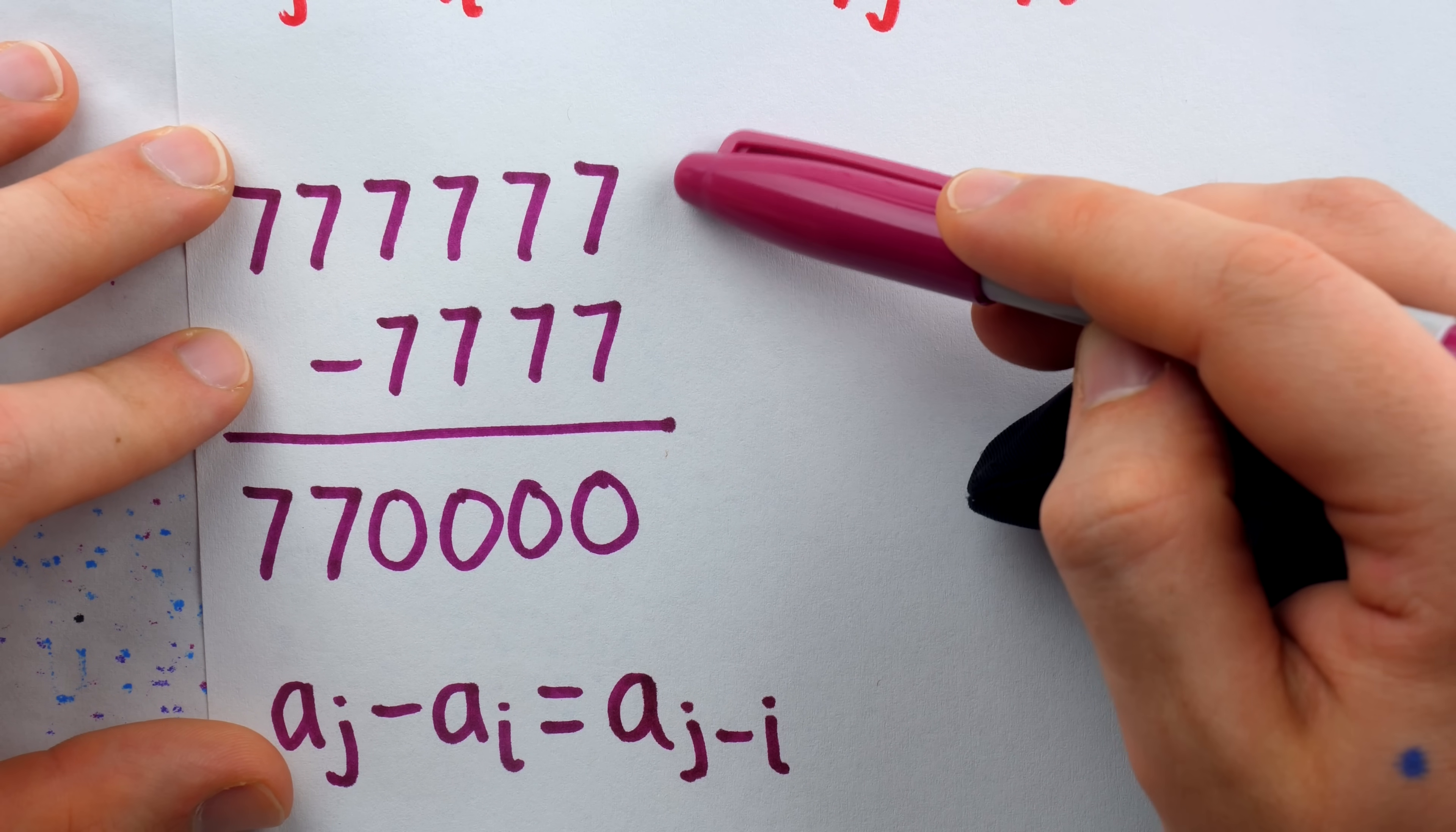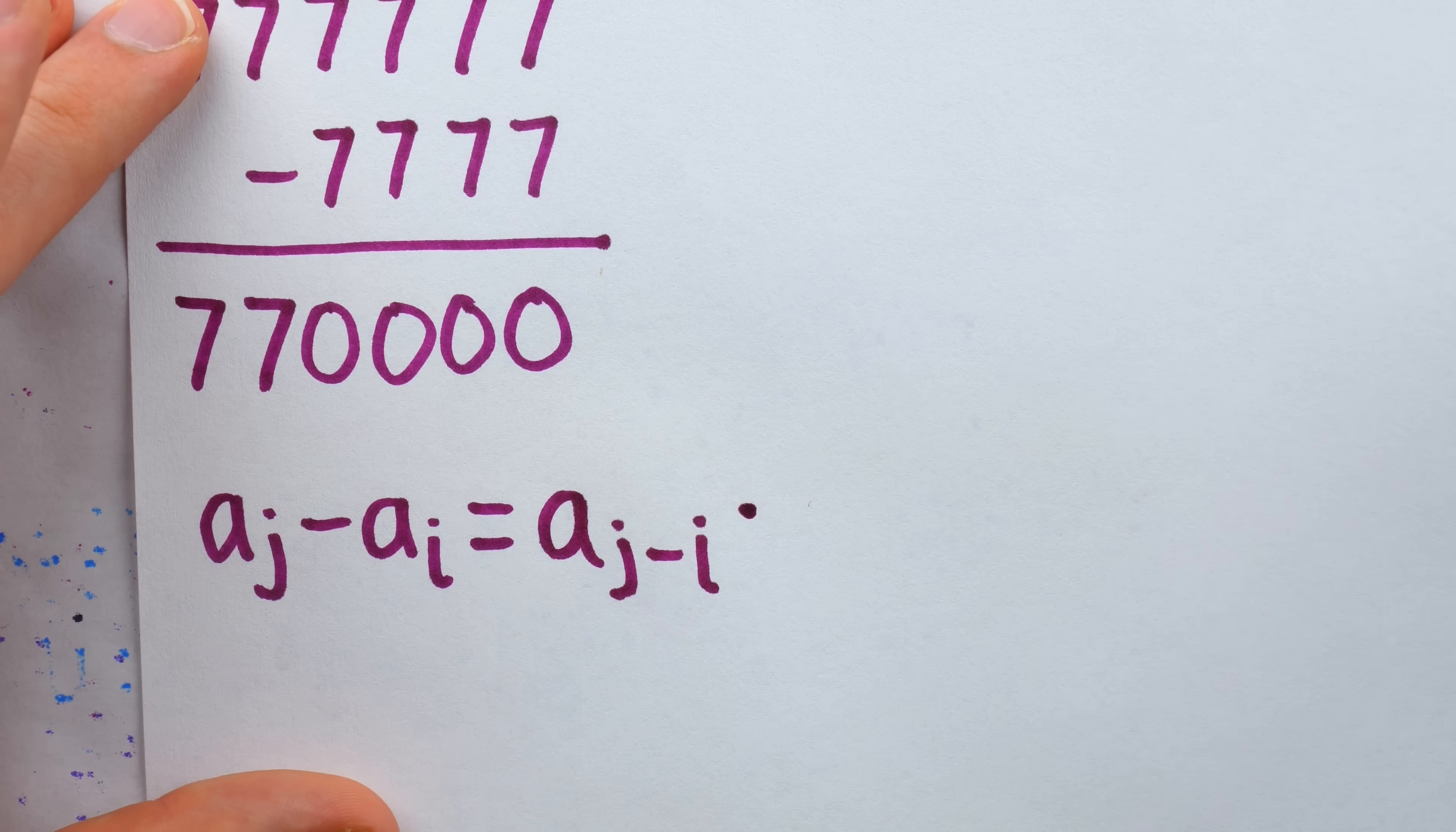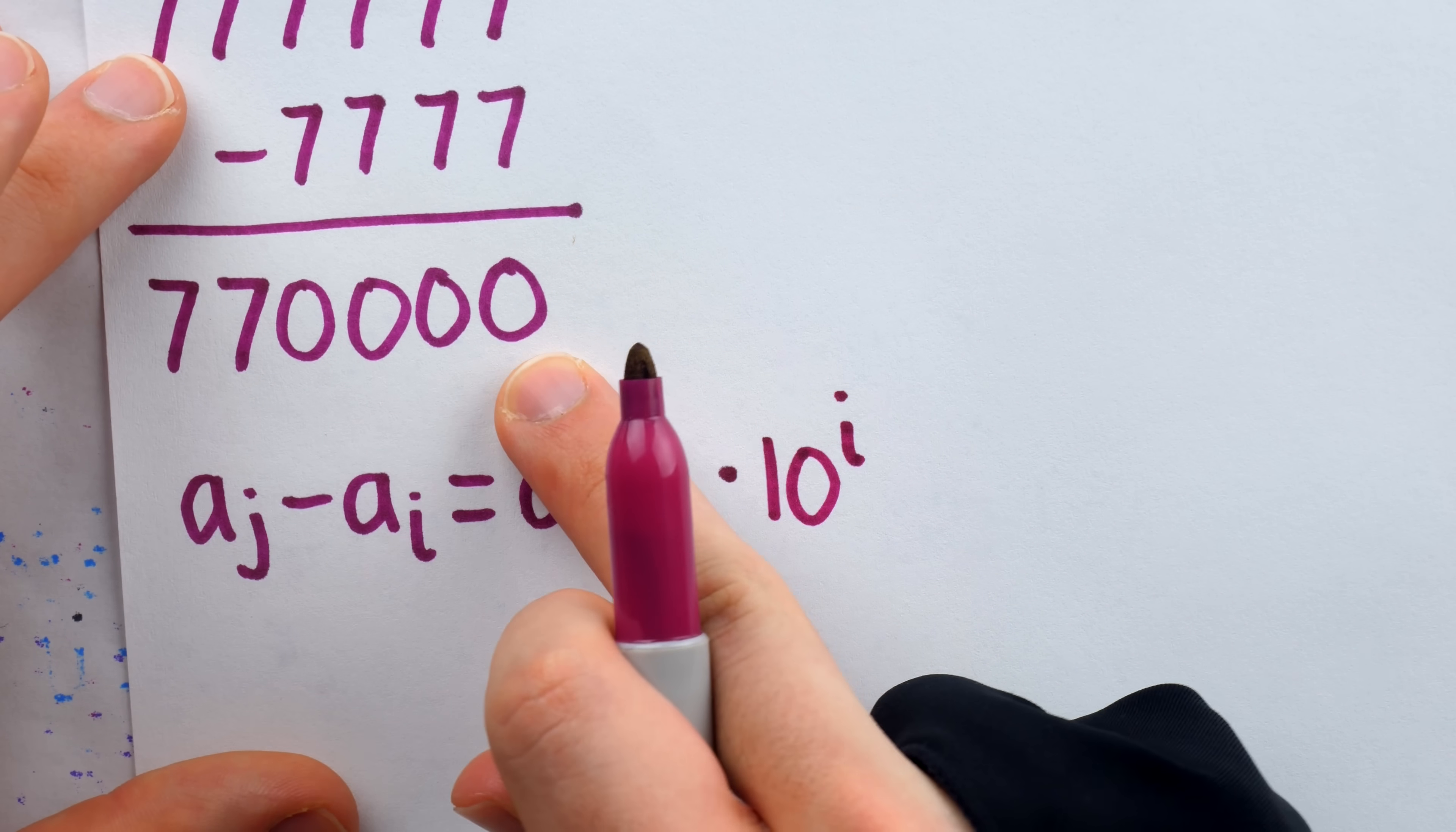In this example we wrote out, j was six, and i was four. So it started with six minus four, or two sevens. That would be the second term, of course, of our sequence. That's how the number starts. Then we just need to multiply it by a power of ten to get all those zeros at the end. How many zeros? Well, however many sevens there were in A_i, that's how many zeros there will now be in the difference. So we have to multiply by ten to the power of i. That fills in all of those zeros.